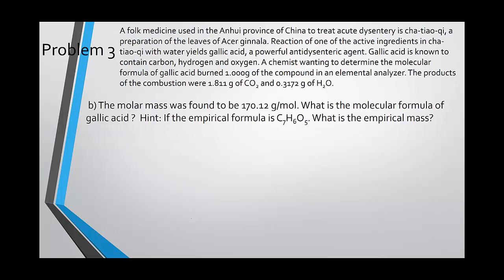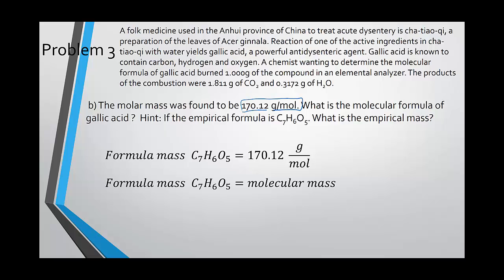Now for part B, we want to look at the molar mass. And we want to say, does that match with the empirical formula or not? Well, if the empirical mass and the molecular mass are the same, then so is the empirical formula and the molecular formula. If not, we need to multiply it by some integer to find the molecular formula. In this case, if we add up our formula mass for C7H6O5, we end up with 170.12. This is the same as our given molar mass, which means that since our formula mass and our molecular mass are the same, our formulas are the same as well.